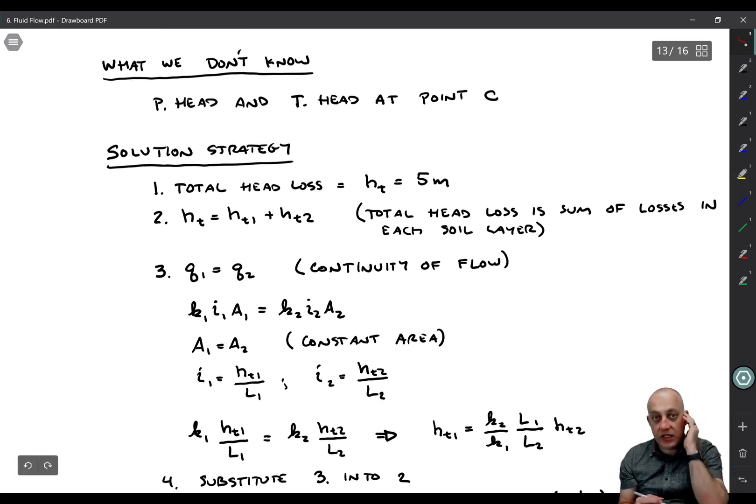The total head loss always has to equal the sum of the individual head losses within the system. The third really important condition is continuity of flow. The flow going into layer one has to equal the flow going into layer two. There has to be continuity of flow as you go through, assuming the soil is not changing volume. Q is equal to KIA. So we can write K1, I1, A1 is equal to K2, I2, A2. But then we know A1 is equal to A2. There's a constant area.